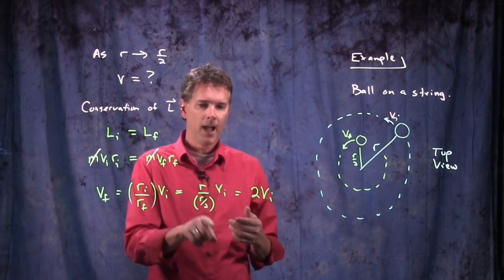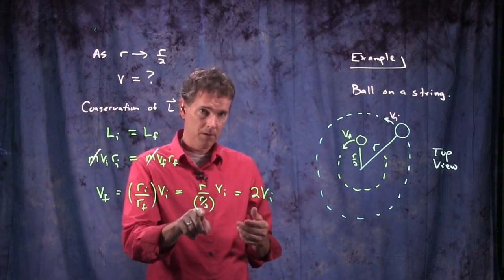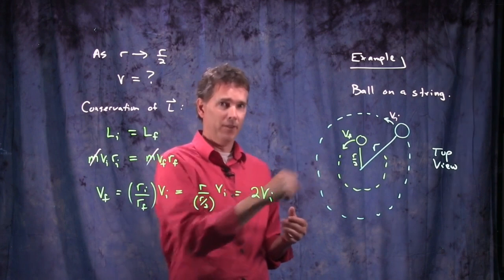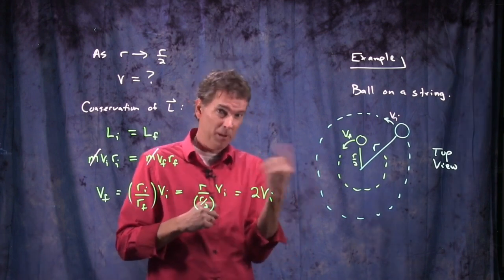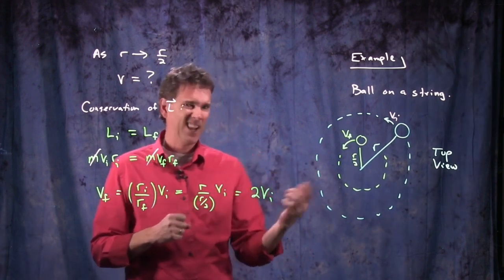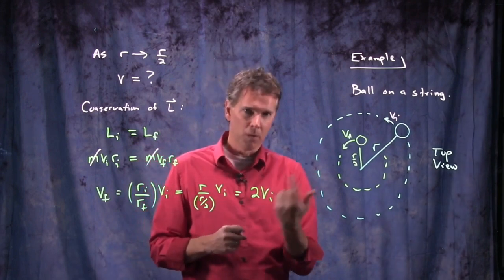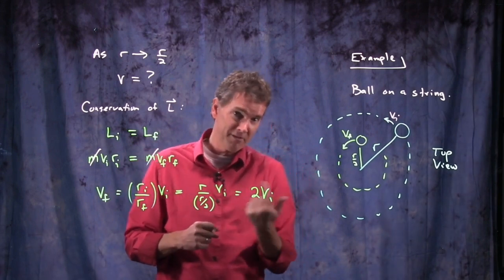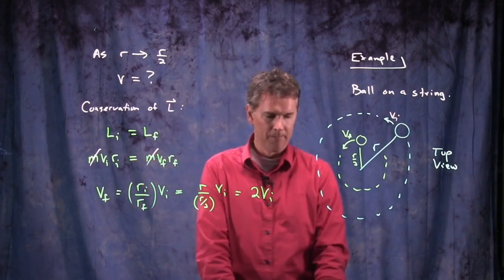And in fact, in the limit as this thing goes to zero, it would be going infinitely fast. It would be orbiting like this. It's kind of like what happens when something gets sucked into a black hole, right? It starts spinning faster and faster and faster as it goes around. It's kind of a cool idea.